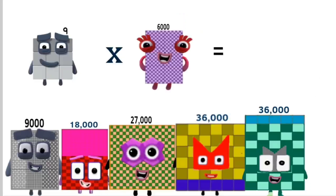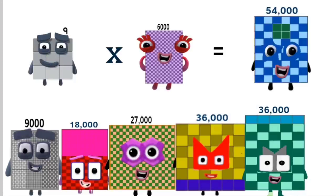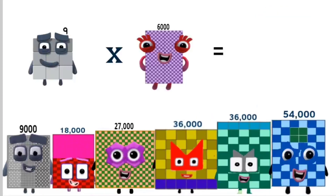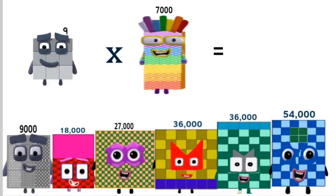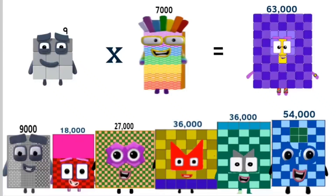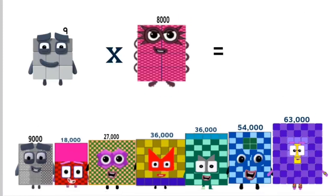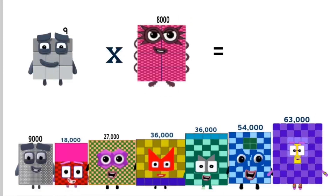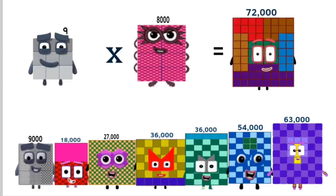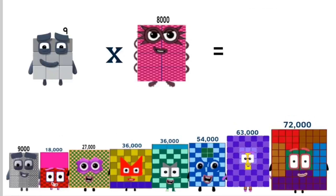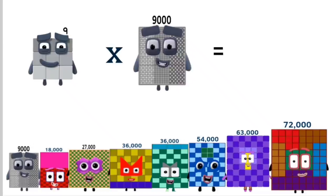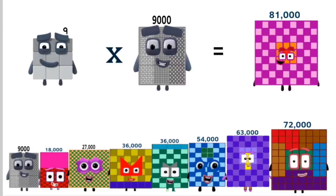Times 6,000 equals 54,000. Times 7,000 equals 63,000. Times 8,000 equals 72,000. Times 9,000 equals 81,000.